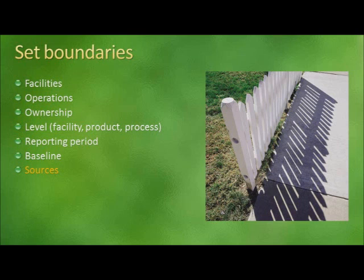Boundaries can include which facilities will be included in the Carbon Footprint Report, and which operations occurring in those facilities will be included. What level of ownership will be considered? For instance, will you only be considering facilities owned by the company, or will you be considering facilities that are leased as well? The level of granularity is also important. Will this Carbon Footprint only be measuring emissions produced by facility operations, or will it drill down to a product or a process level?